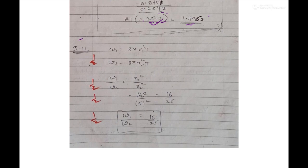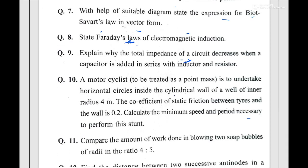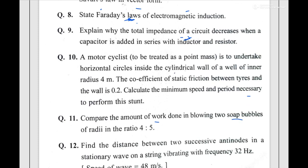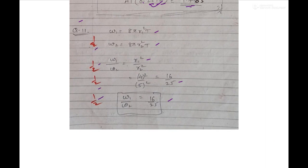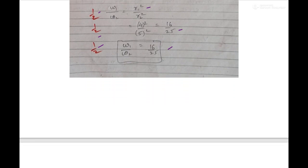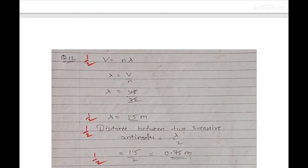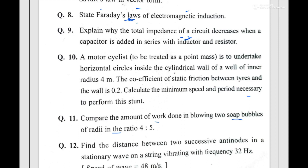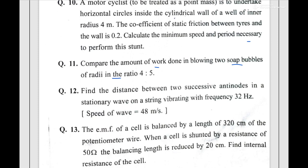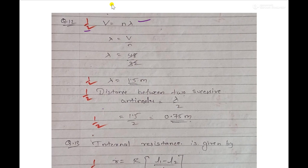Question number 11: calculate the amount of work done for two soap bubbles with radii in ratio 4:5. Compare the two cases and solve. Each step carries half a mark. Question number 12: the formula is given for half marks. I have solved it and we got 1.5. Simple calculations here — no need for log. Distance between two successive antinodes is lambda by 2 — we got the answer. Question on internal resistance of a cell: using the formula, they have reduced the balancing length by 20 cm, so we solved it and the answer is 3.33 ohms. Don't forget to write the unit — missing the unit will cost you half a mark.